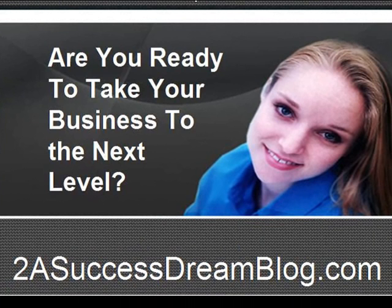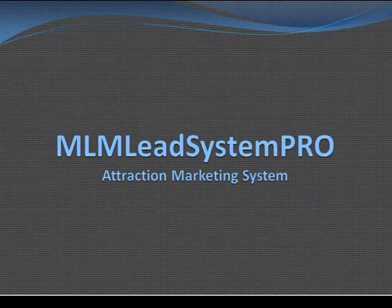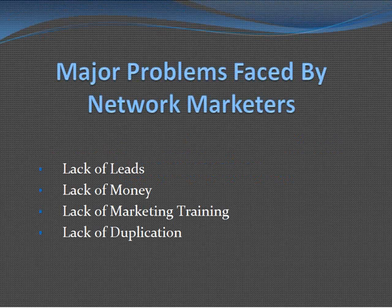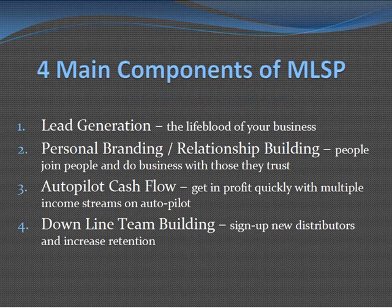What you need to do first is understand the whole attraction marketing system — how you promote yourself and present your business. A lot of major problems faced by network marketers are just hard to find leads, consistent leads. There's always been a lack of new people to talk to, a lack of money and income coming in, a lack of marketing training, and of course a lack of duplication to build a big team.